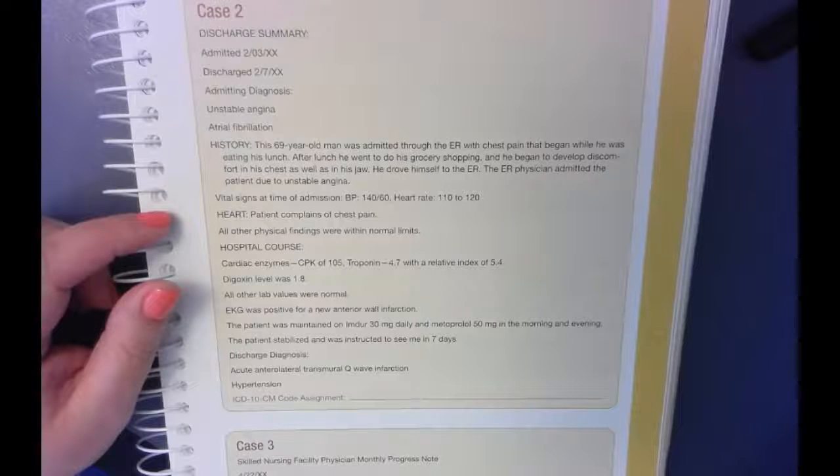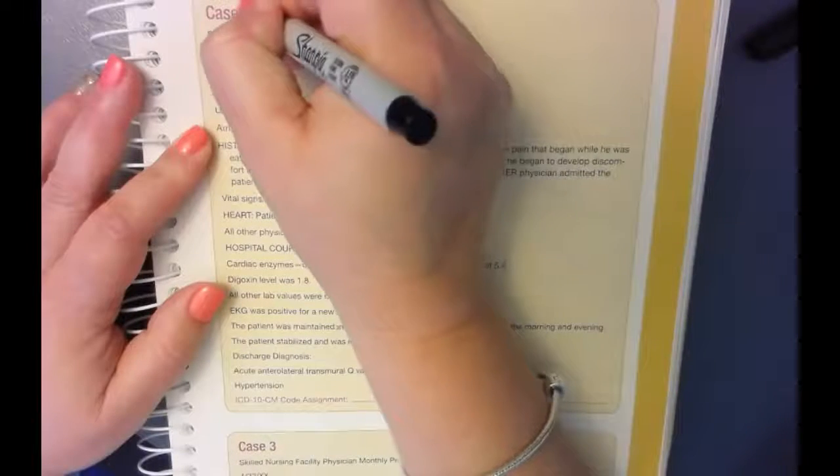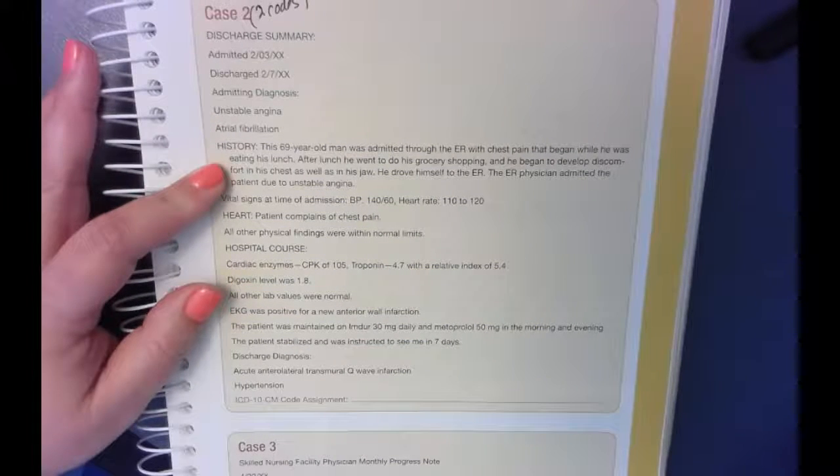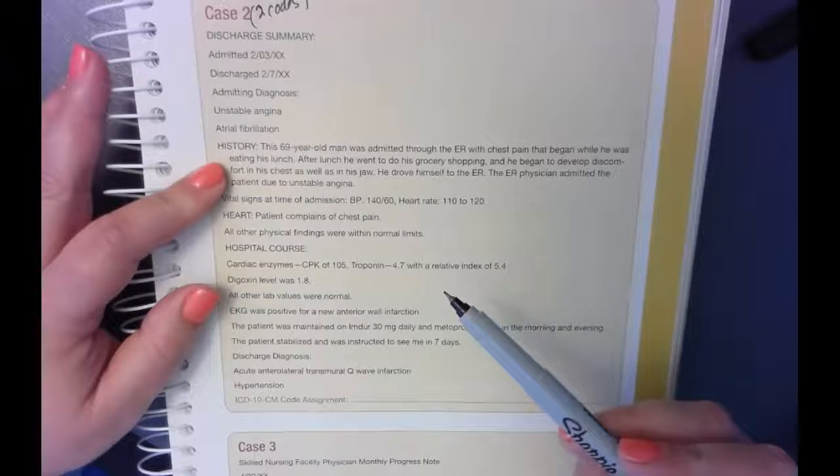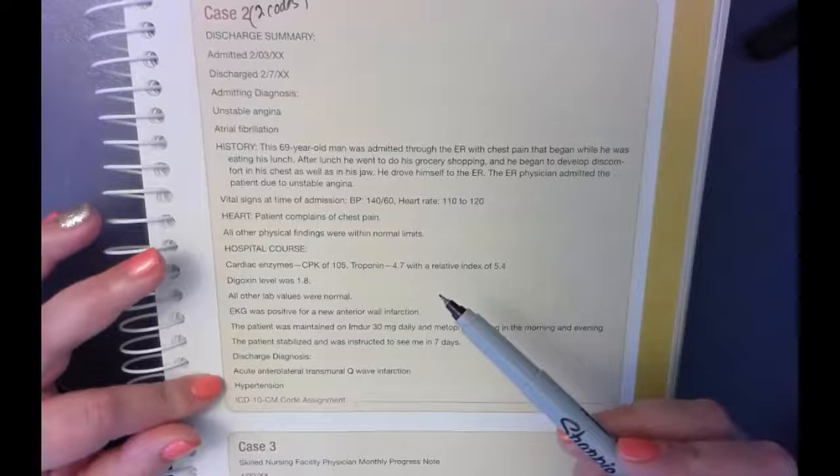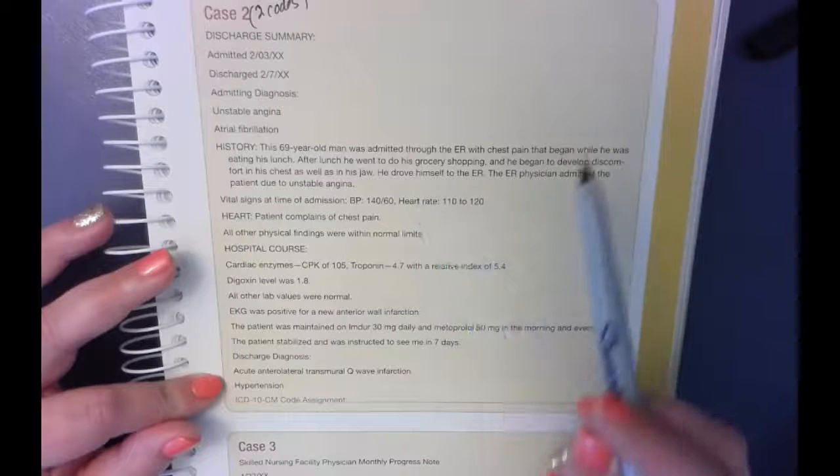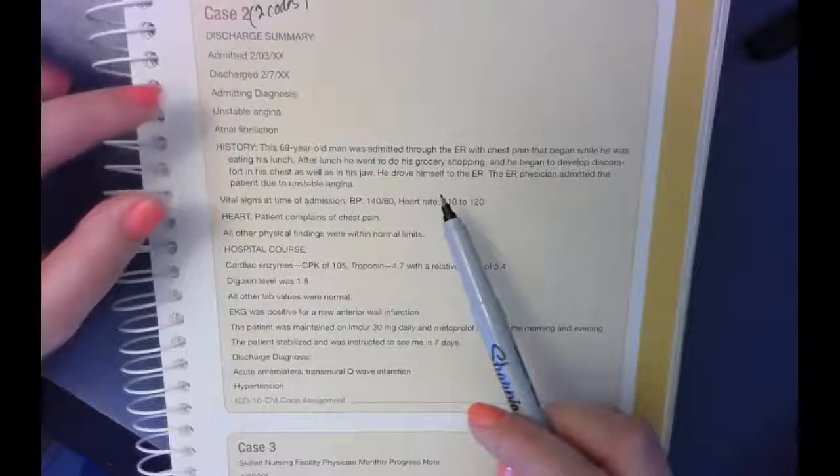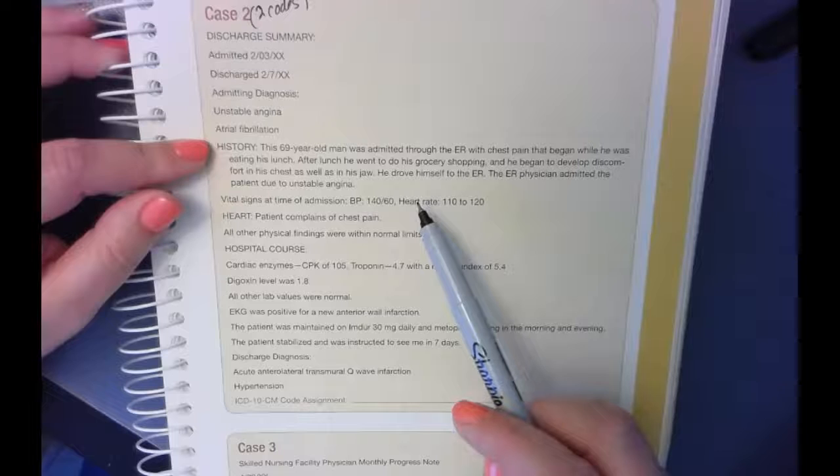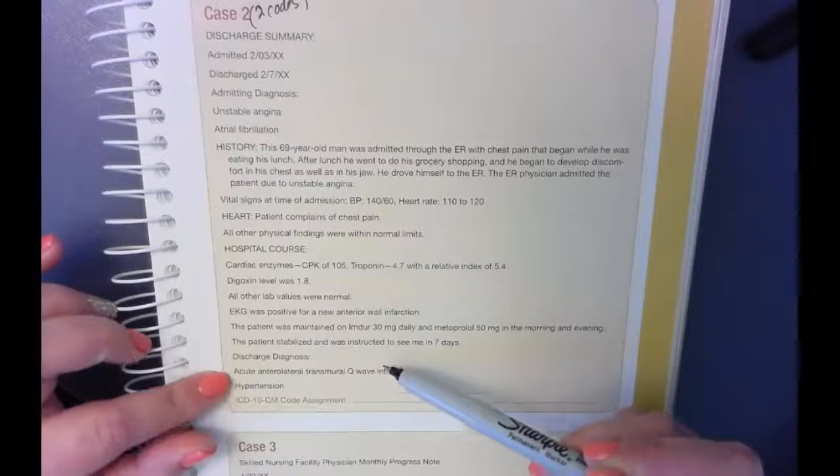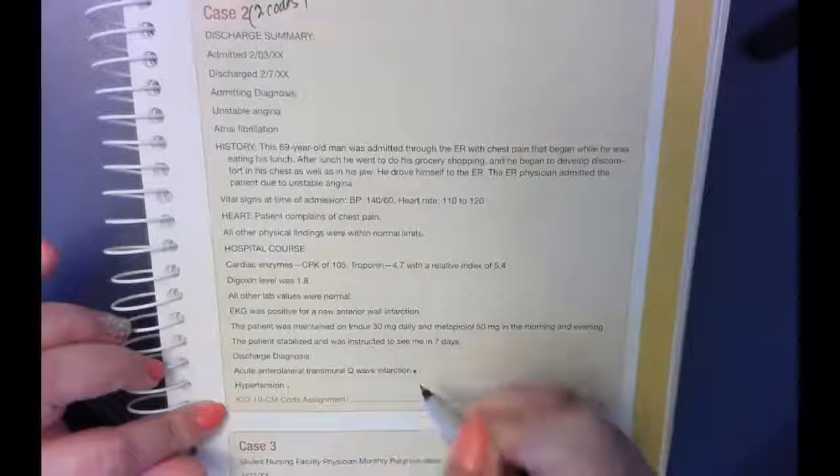For case two, it looks like you're going to have two codes. I'll put that up there in parentheses. Those two codes, after reading through this, you are going to end up looking up the code. So his admitting unstable angina and atrium afib. So he had an infarction and then the hypertension. So you're going to code those discharge diagnoses.